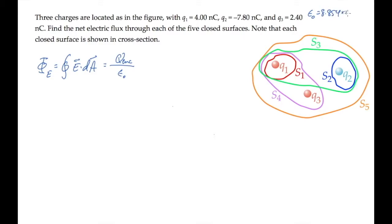Epsilon naught is a constant. I'll write its value here. So we can calculate the flux through each surface by finding the charge enclosed by it and dividing by that constant.